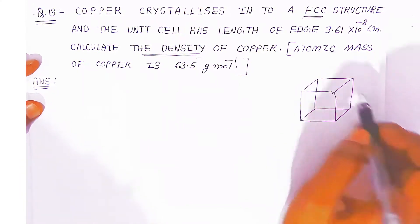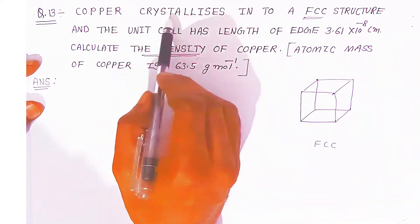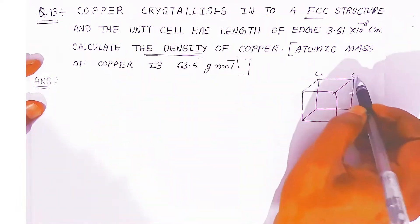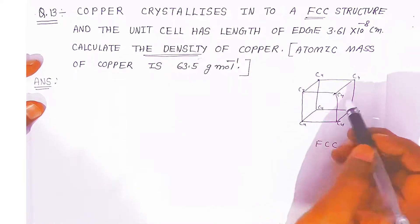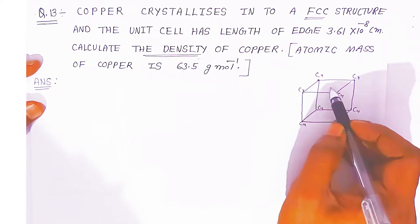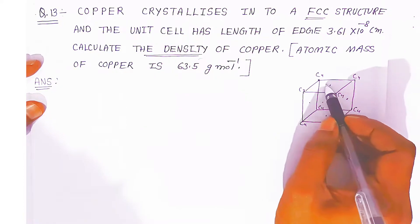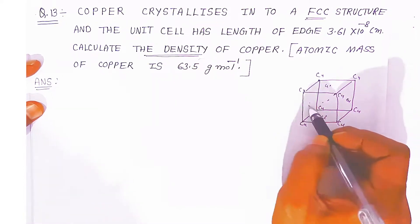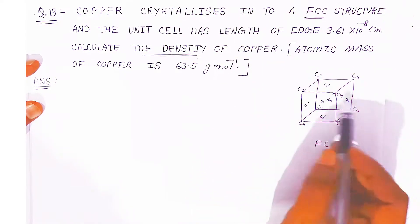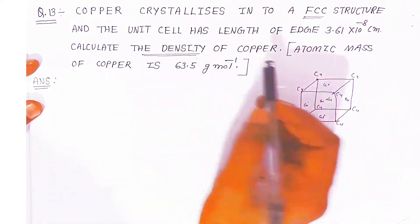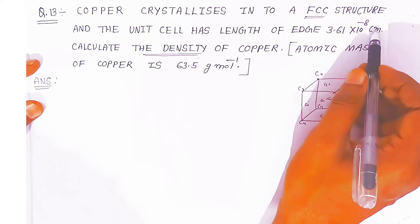At 8 corners, the copper atoms are present. Since it is FCC structure, copper crystallizes. So copper will be present at 8 corners — total 8 corners are there. Now since it is FCC, there are also 6 surfaces: above, below, front side, back side. So 6 copper atoms will also be present on the surfaces. The unit cell has a length of 3.61×10⁻⁸ cm.